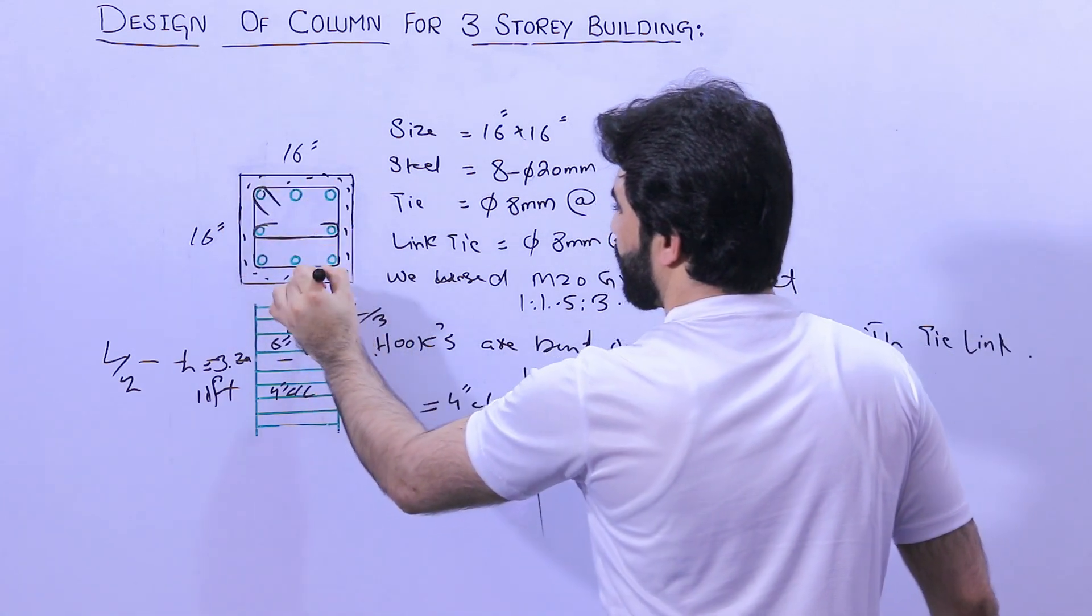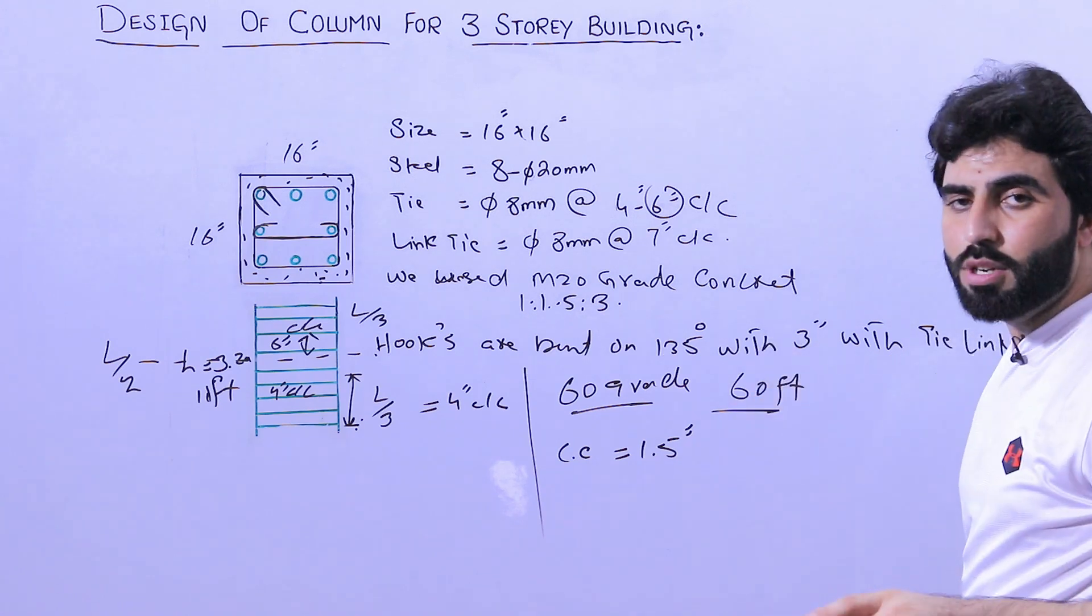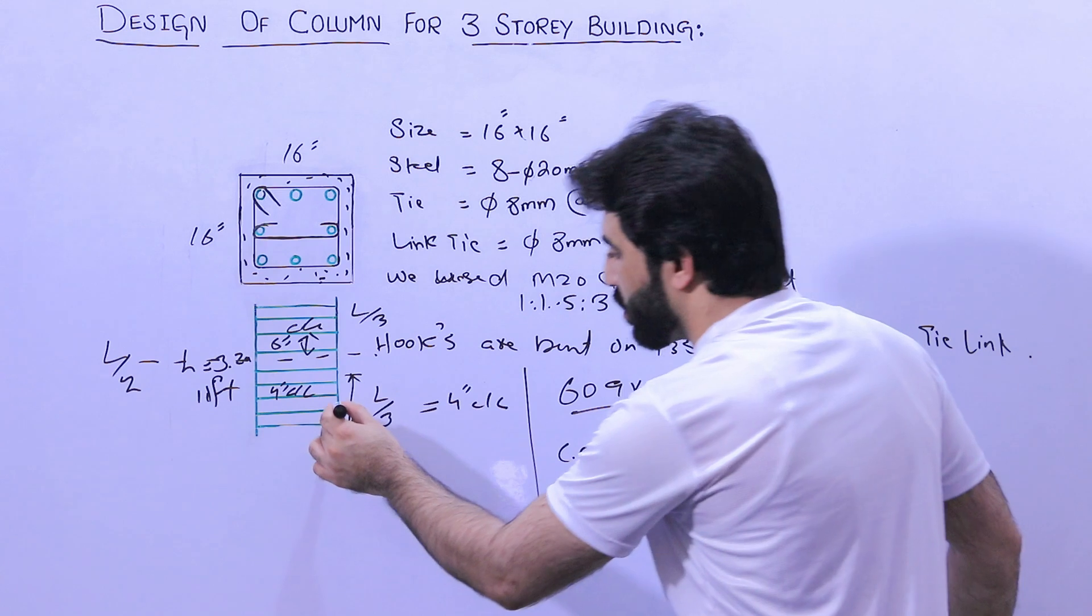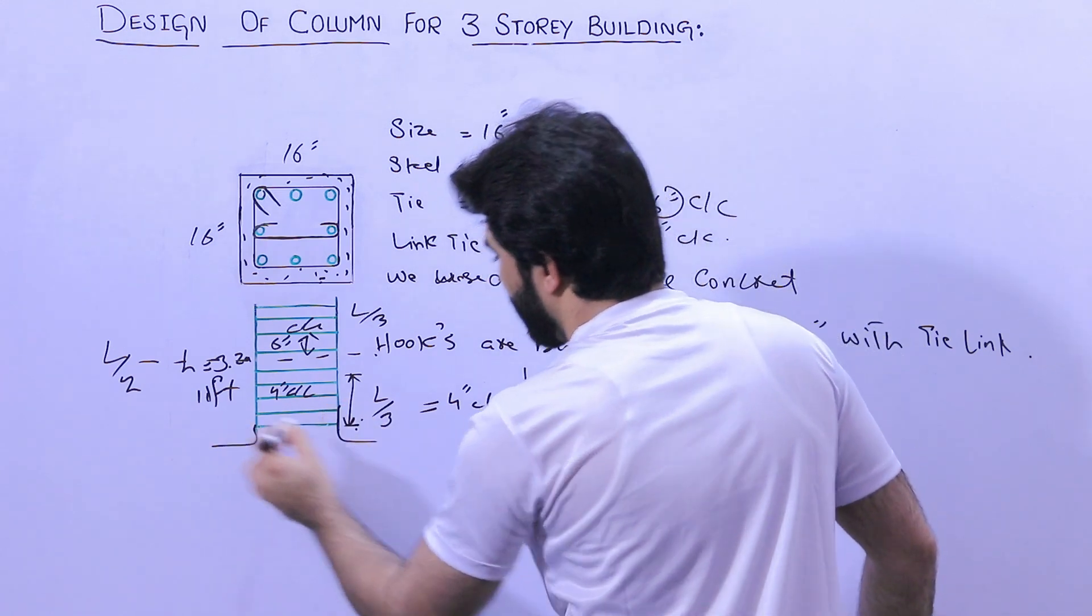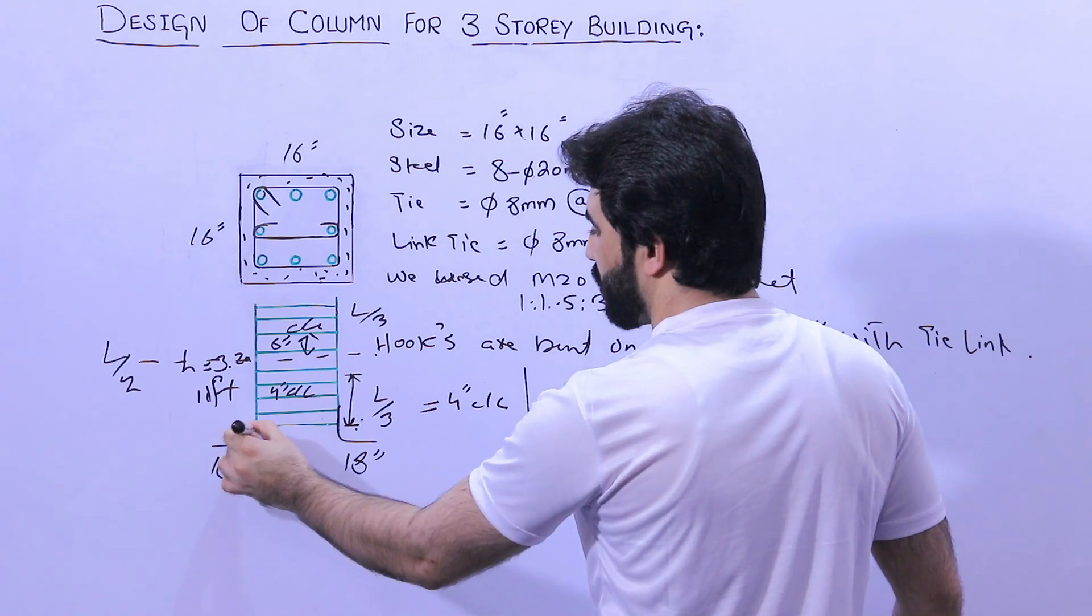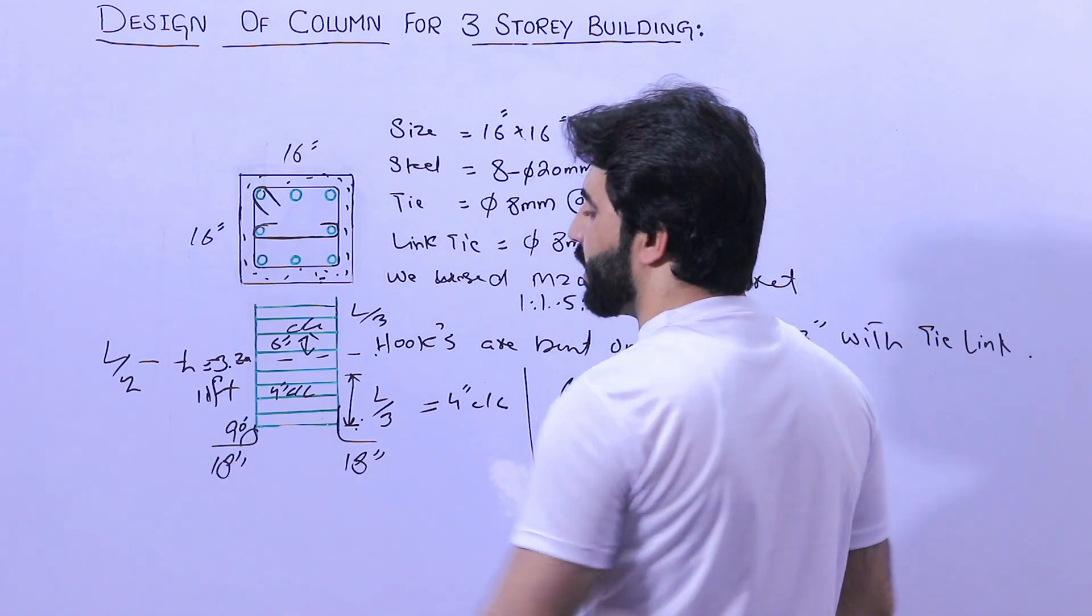But at the bottom on the top of the footing, you can see here these are the legs. These legs, the legs length was 18 inches. It was also 18 inches and it was bent on 90 degree.